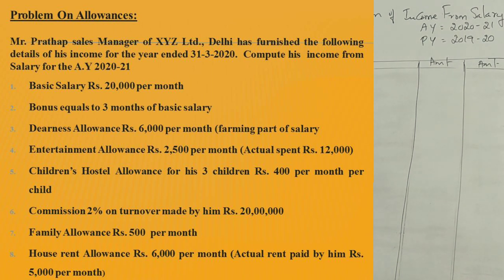Children's hostel allowance is Rs. 400 per month per child for 3 children. Commission is 2% on turnover made by him, with turnover worth Rs. 20 lakhs.